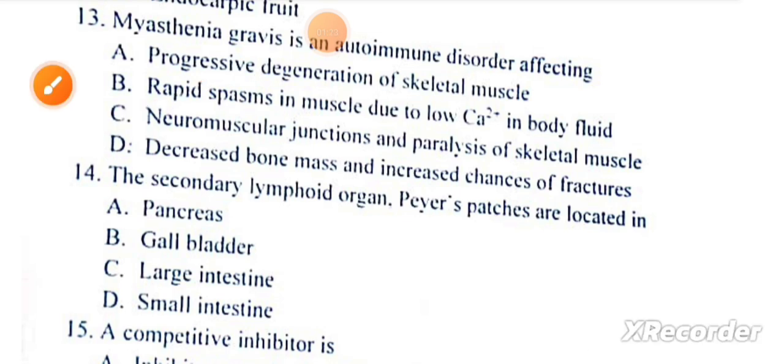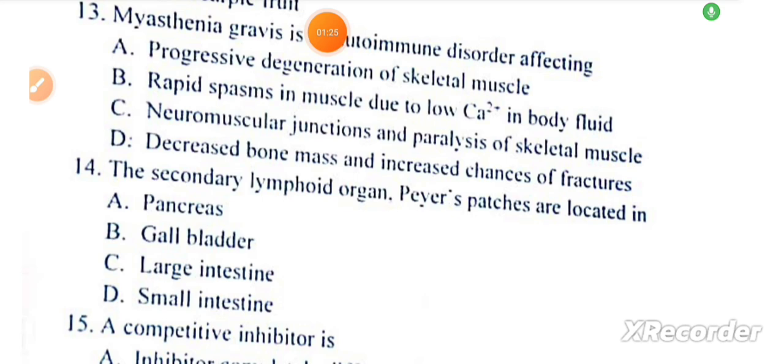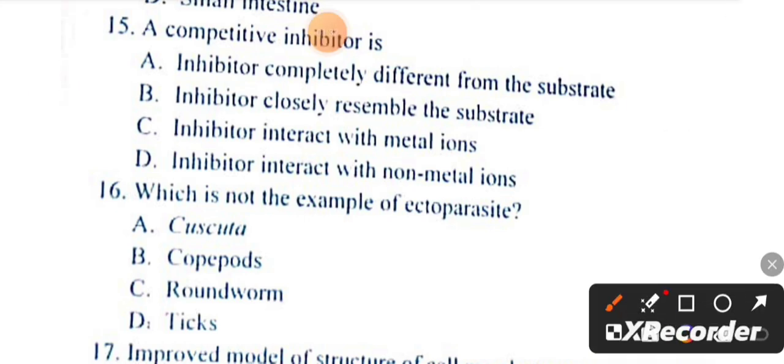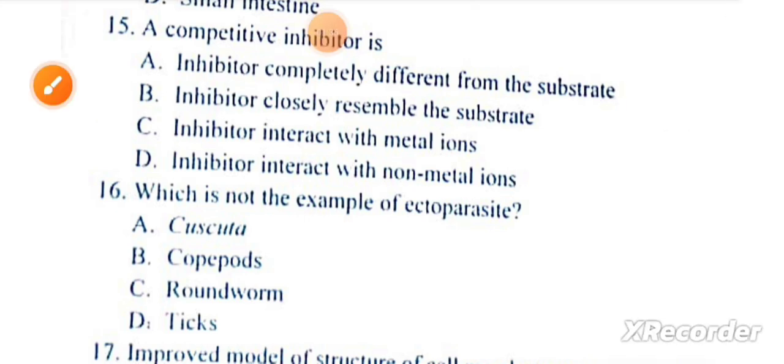The secondary lymphoid organ Peyer's patches are located in the small intestine. Question number 15: A competitive inhibitor closely resembles the substrate.